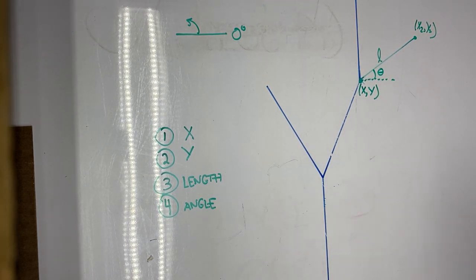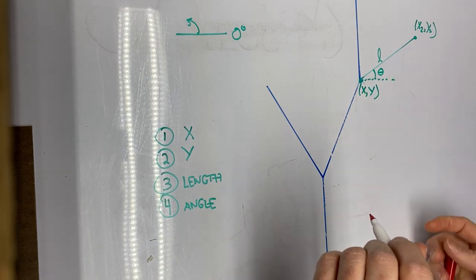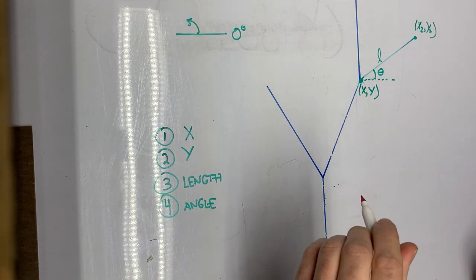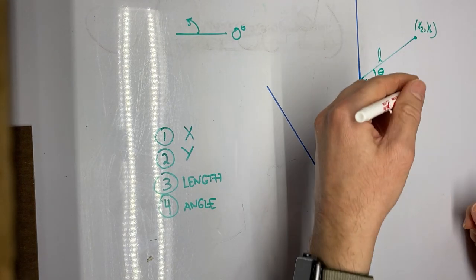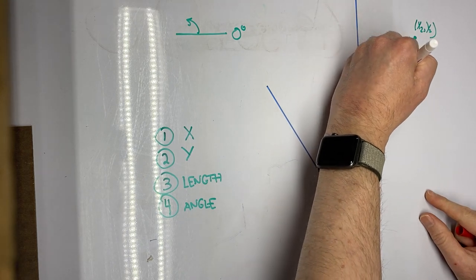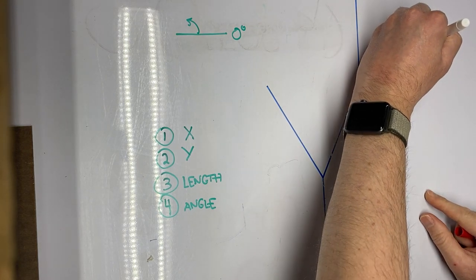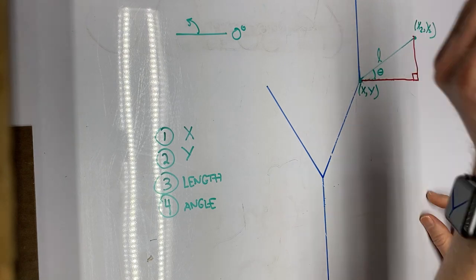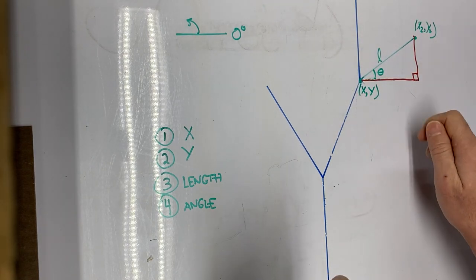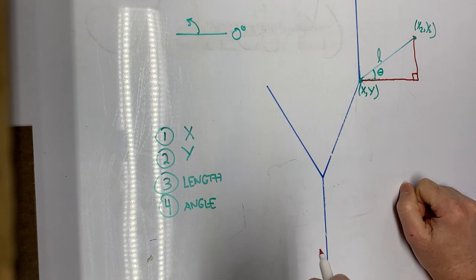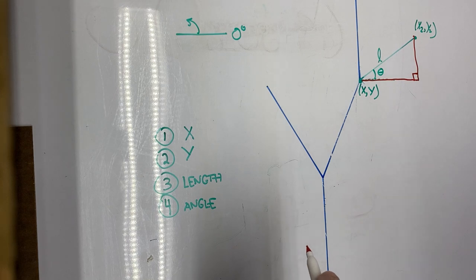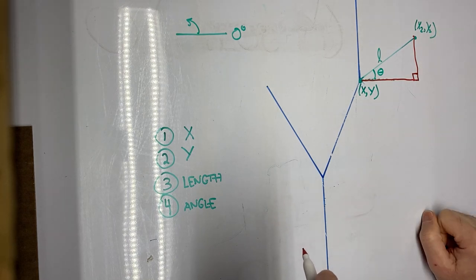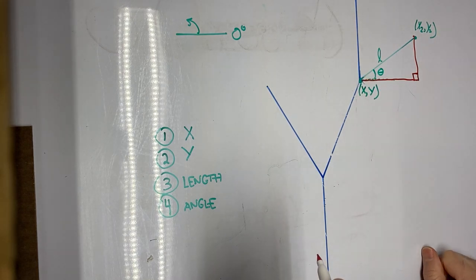So I'm going to switch colors here. And I'm going to draw the horizontal and vertical components that make up the line, the green branch line that we're trying to draw. So let's do that. So now we have a right angle here. If we can solve for the sides of this right triangle, then we can calculate what x2 and y2 is because we already know the point x, y.